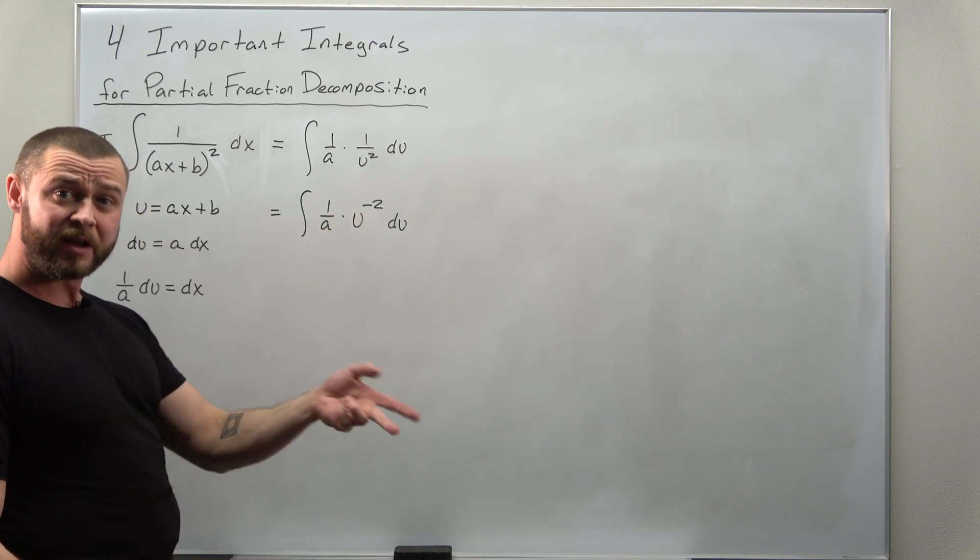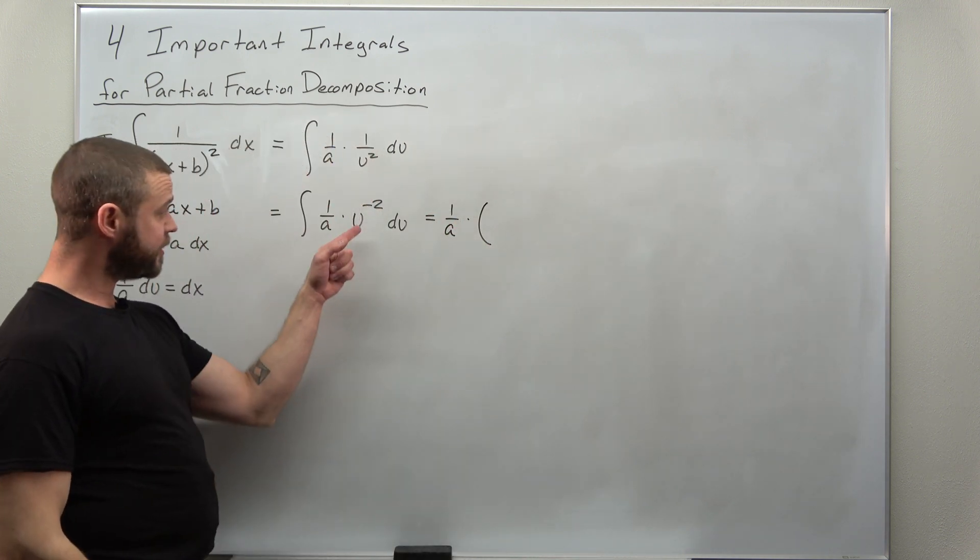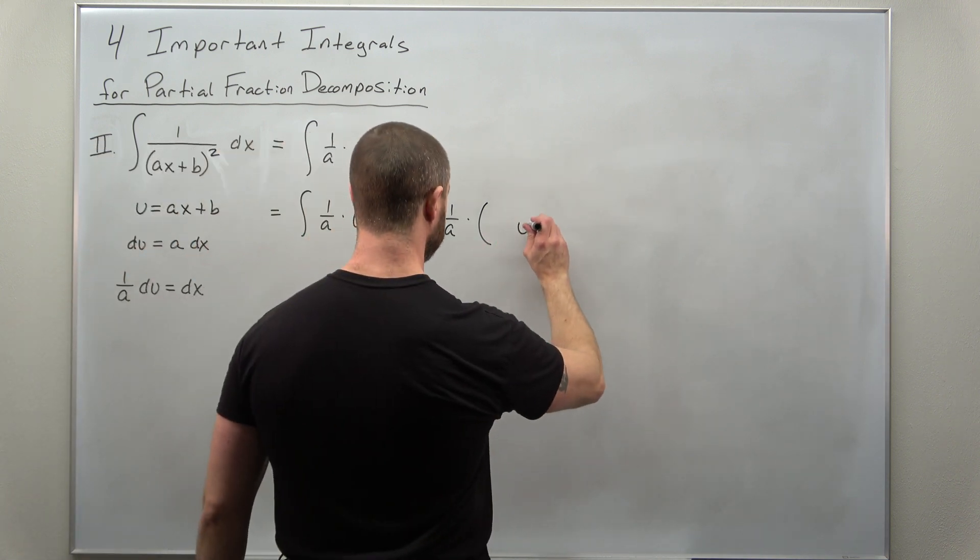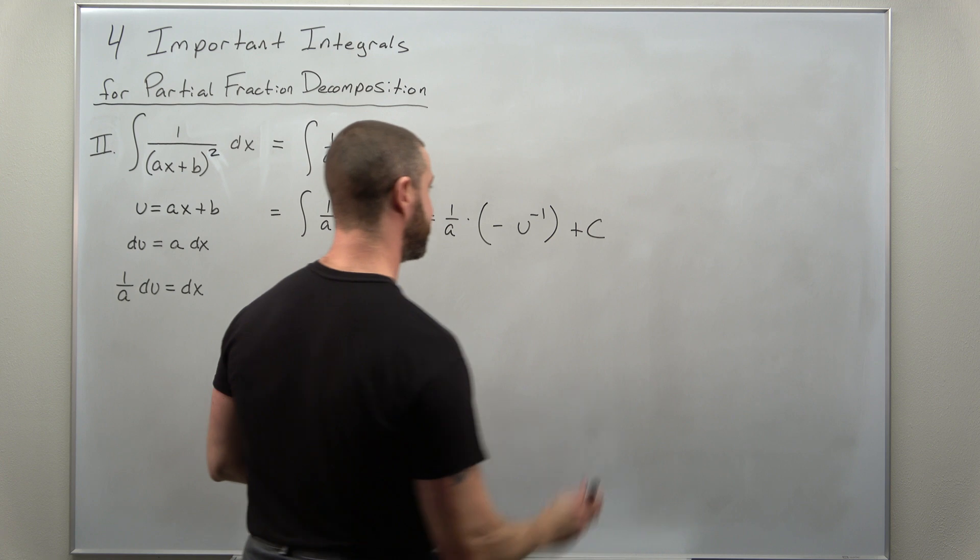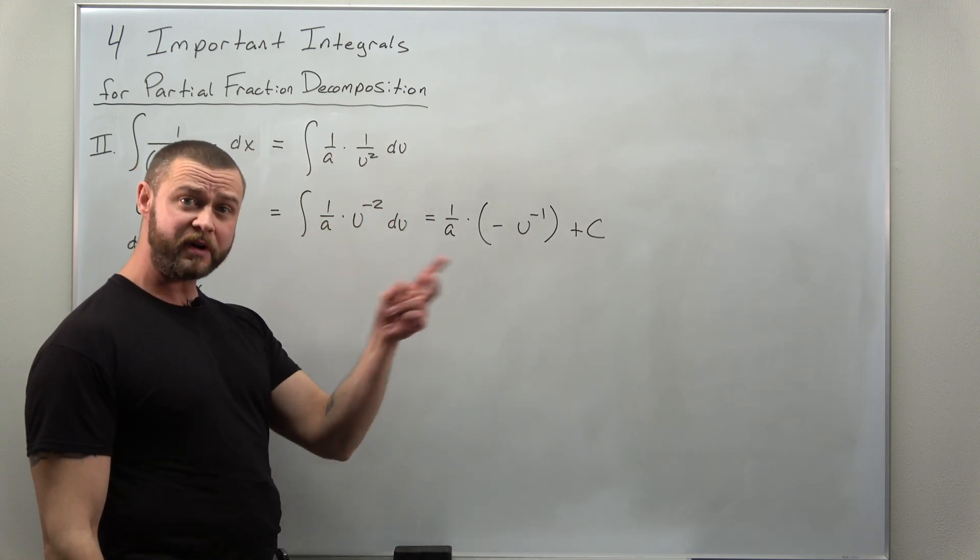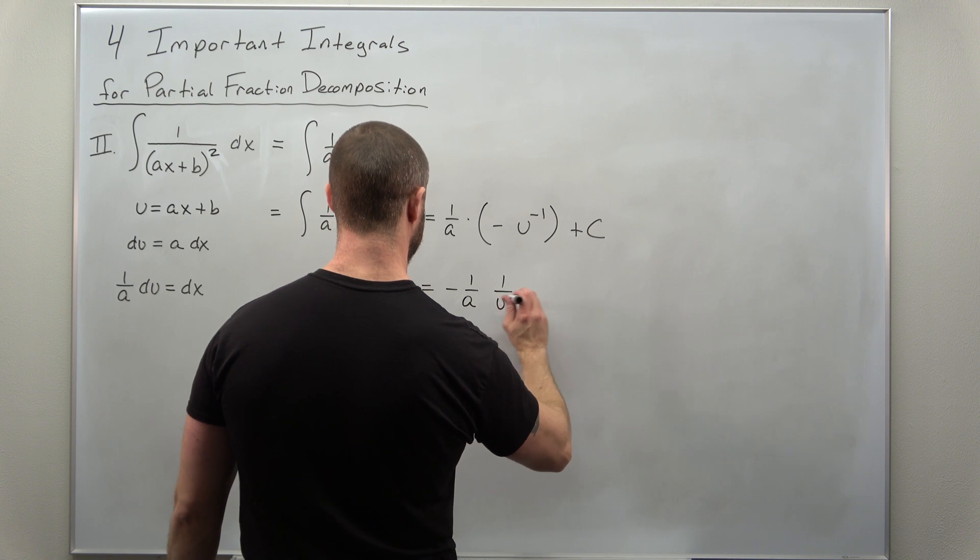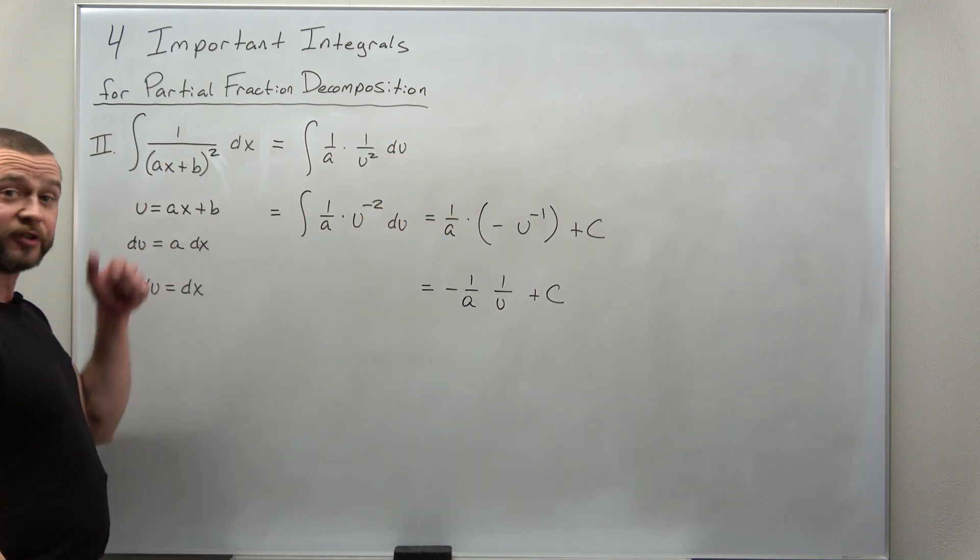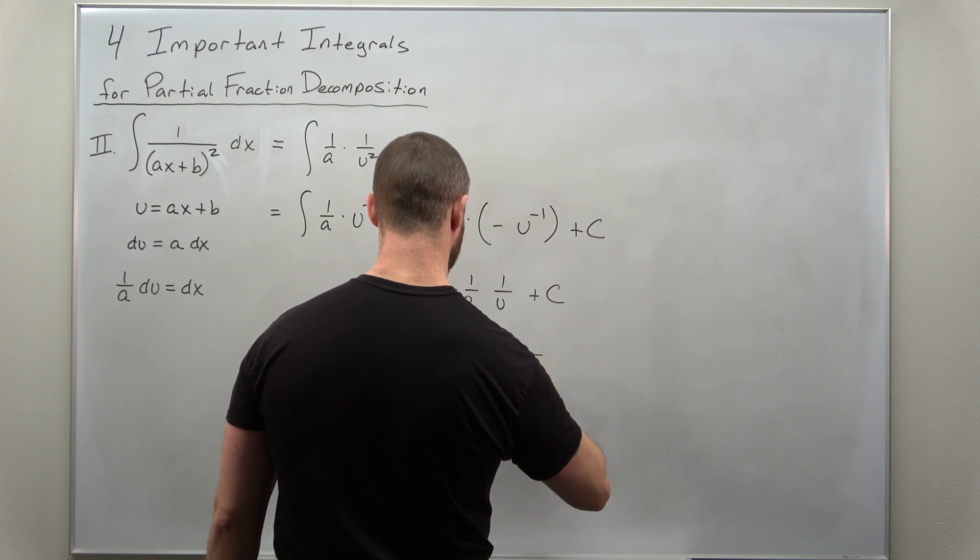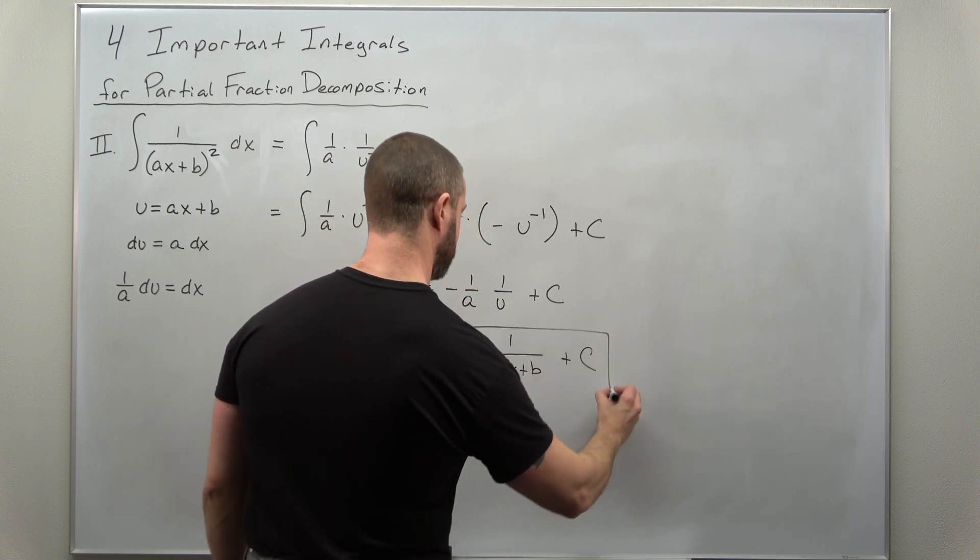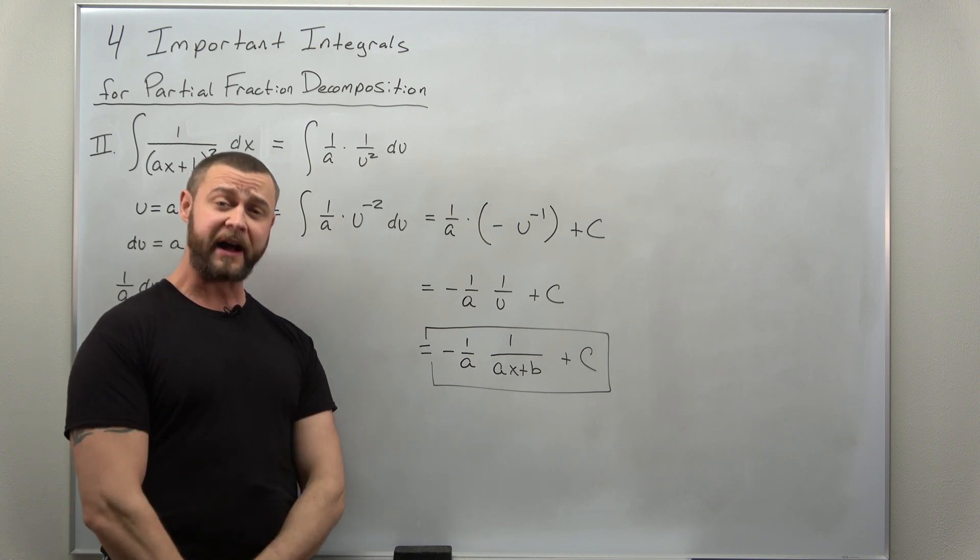So we should get (1/a), and then your antiderivative here, add one to that power, you'll get u to the negative one. And then we divide by the new power, we're dividing by negative one. We just get an extra negative there. I always like to convert my negative exponents back to fractions. And we can back substitute our u as our substitution, and we get our antiderivative for this second type of integral for partial fraction decompositions.